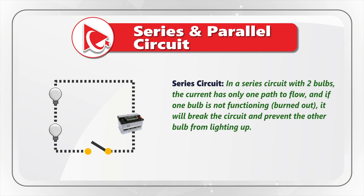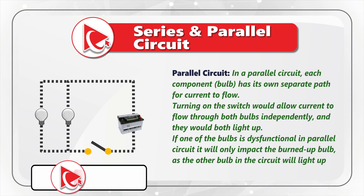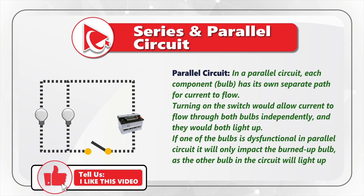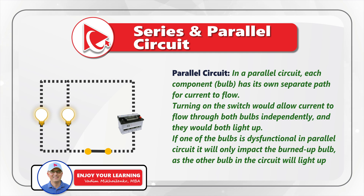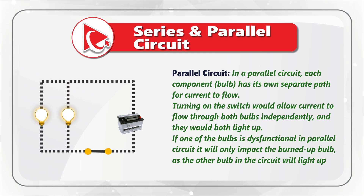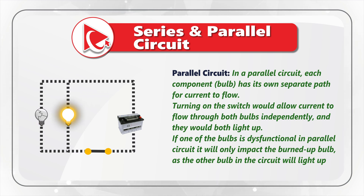In a series circuit with two light bulbs, the current has only one path to flow, and if one bulb is not functioning — for example, it could be burned out — it will break the circuit and prevent the other bulb from lighting up. In a parallel circuit, each component has its own separate path for current to flow. Turning on the switch would allow current to flow through both bulbs independently and they would both light up. If one of the bulbs is dysfunctional in a parallel circuit, it will only impact that burned-out bulb, as the other bulb in the circuit will still light up.